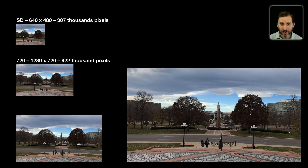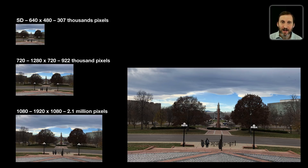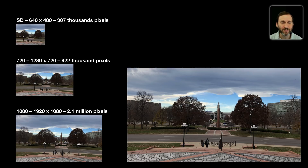But then things got even better and we got to 1080. 1080 is 1920x1080 pixels. The number used — 720 or 1080 — is the vertical pixel dimension. So 1920x1080 turns out to be 2.1 million pixels, significantly better than 720.